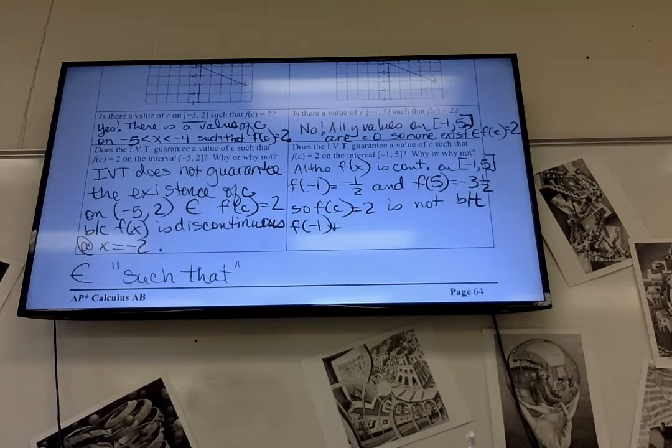F of negative 1 and F of 5. So no IVT. I can't spell. I don't know what's happening. Well, I don't even try. I should spell in between with a D. I know.